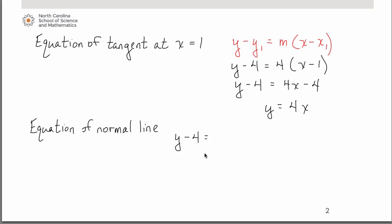will be the opposite reciprocal. So the slope of the normal line will be a negative 1 fourth. And we can simply move the 4 over and add it over if you wish. There is not necessarily a need to distribute everything out. It is quite sufficient to just leave it like that.